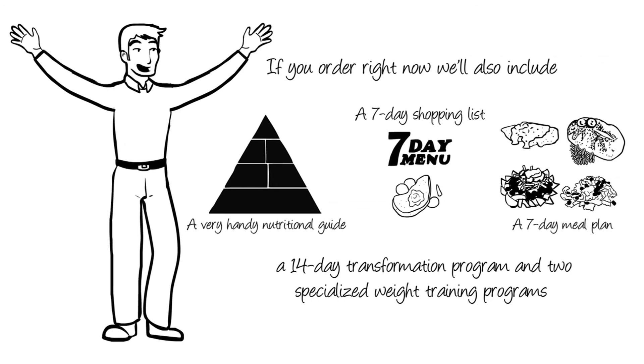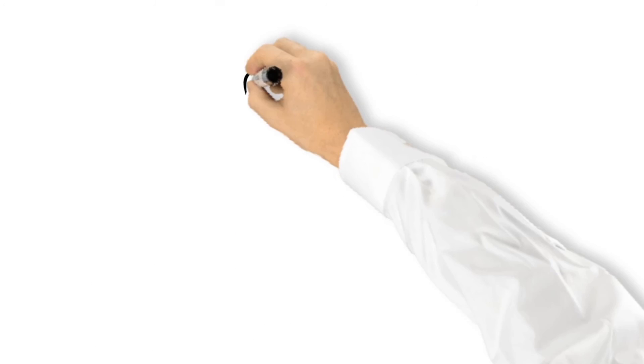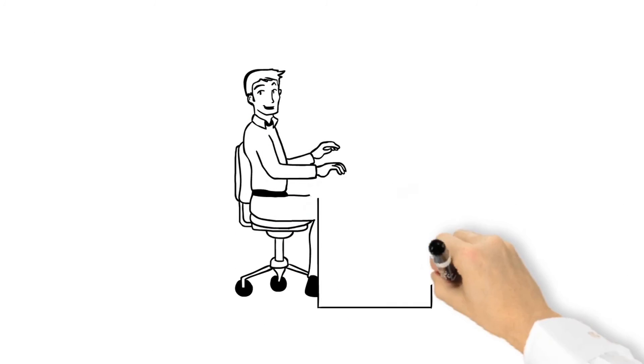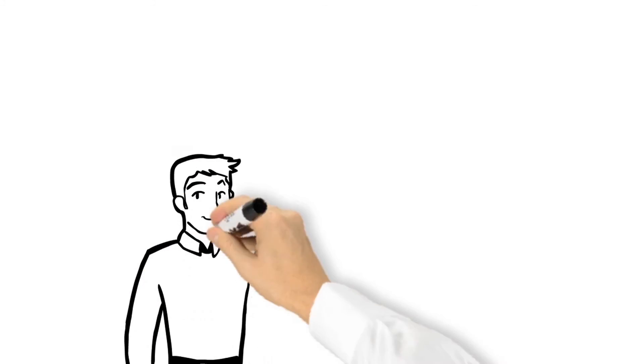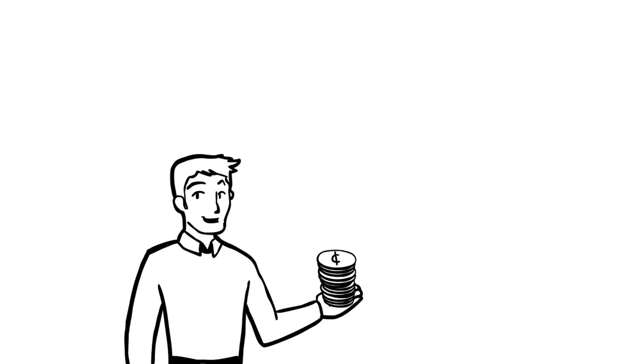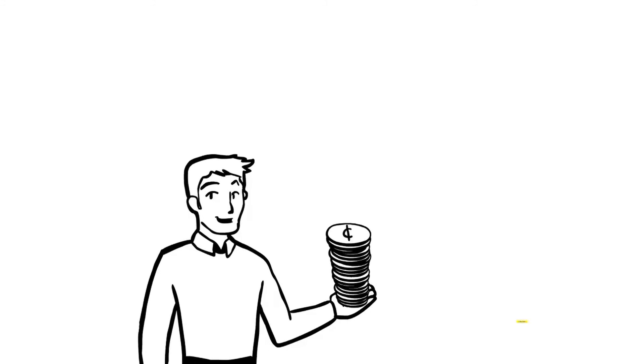Just to recap, if you act now, you'll get the complete system, the nutritional guide, the 7-day shopping list, the 7-day meal plan, a comprehensive fitness guide that includes two specialized training programs, and one colossal discount. Not to mention the no-risk 60-day money-back guarantee, and access to both Dr. Thornton and I almost 24-7 via our personal emails. You're getting all of that for this low price because you're among the very first to grab this offer. So take advantage. Give it a try. You've nothing to lose.